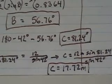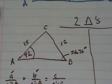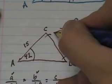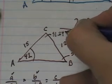Now, I have all of the answers for this triangle. Angle C is 81.24 degrees.